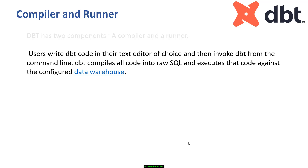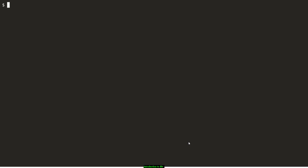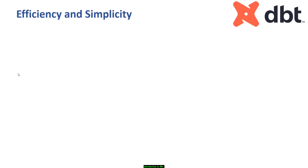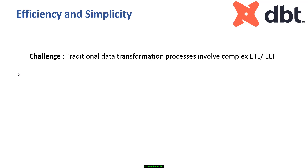To be clear, dbt itself is not running the queries — it's compiling your code into SQL and giving instructions to the configured data warehouse, whether that's a database, Snowflake, or anything else. For example, you write some SQL code, run dbt run, it compiles the whole code and runs it against your data warehouse, and you get the result. This is the dbt compiler and runner in action.